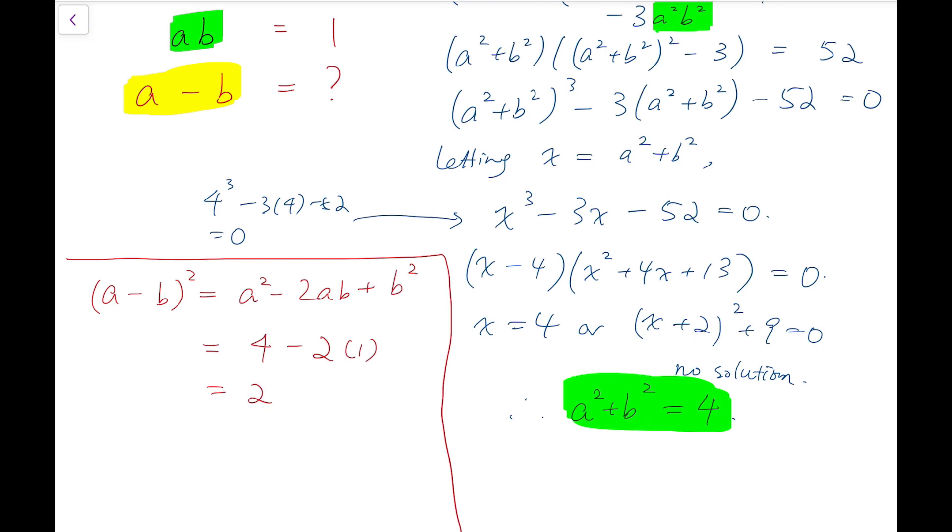And that means (A - B)² = 2. And notice that because A is larger than B, A minus B is positive. So it must take the positive square root. And so the required value is exactly √2. This is our final answer.